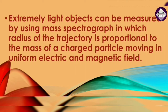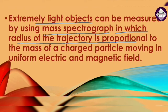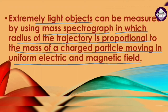For extremely light objects, we use a mass spectrograph, in which the radius of the trajectory is proportional to the mass of a charged particle moving in a uniform electric and magnetic field.